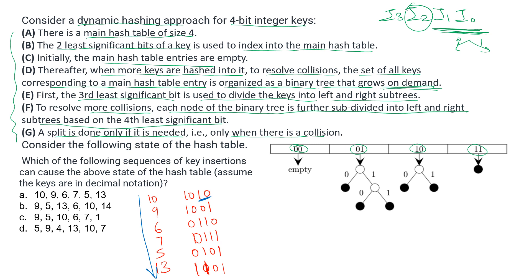When 10 is inserted, its last two bits are 10, so it goes into index 10. Initially the slot is empty so there is no collision. Next, 9 has last two bits 01, so it is placed at index 01. Then 6 has last two bits 10, causing a collision since 10 is already there.